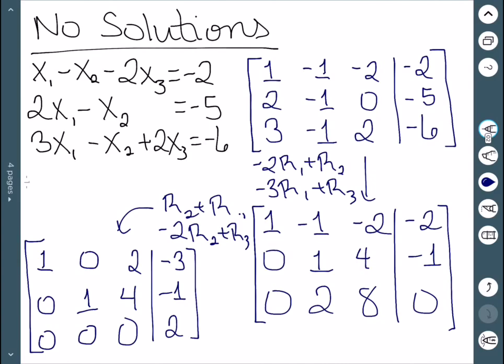So the first one, 0 plus 1 is 1. 1 plus negative 1 is 0. 4 plus negative 2 is 2. And negative 1 plus negative 2 is negative 3.